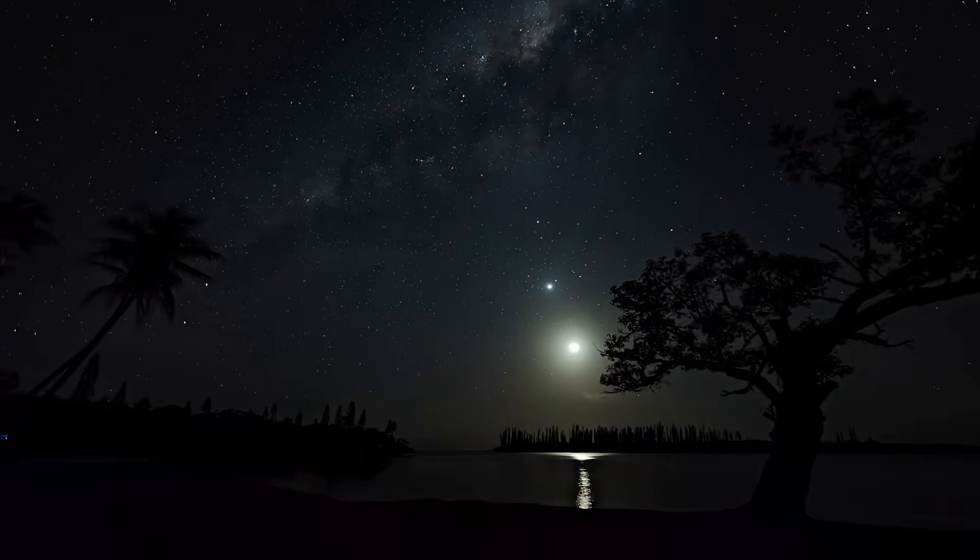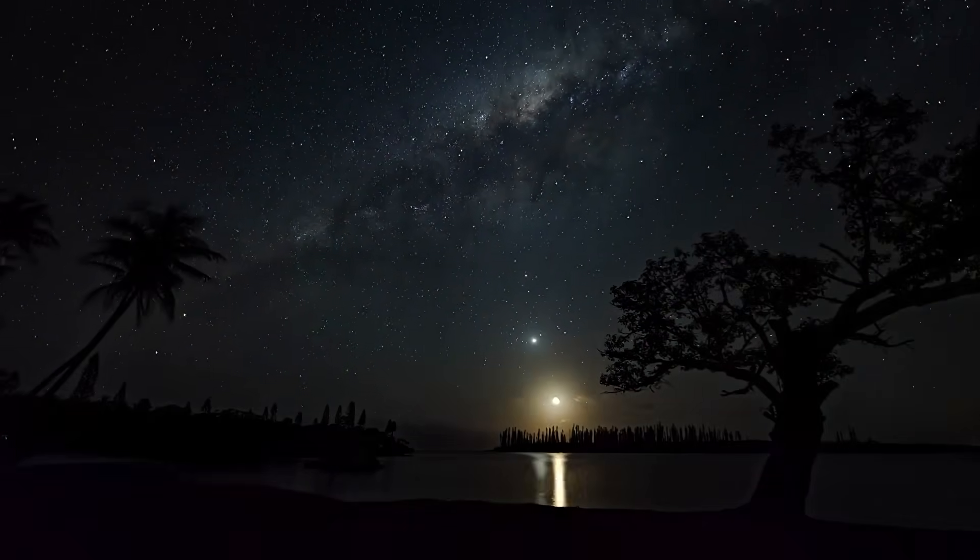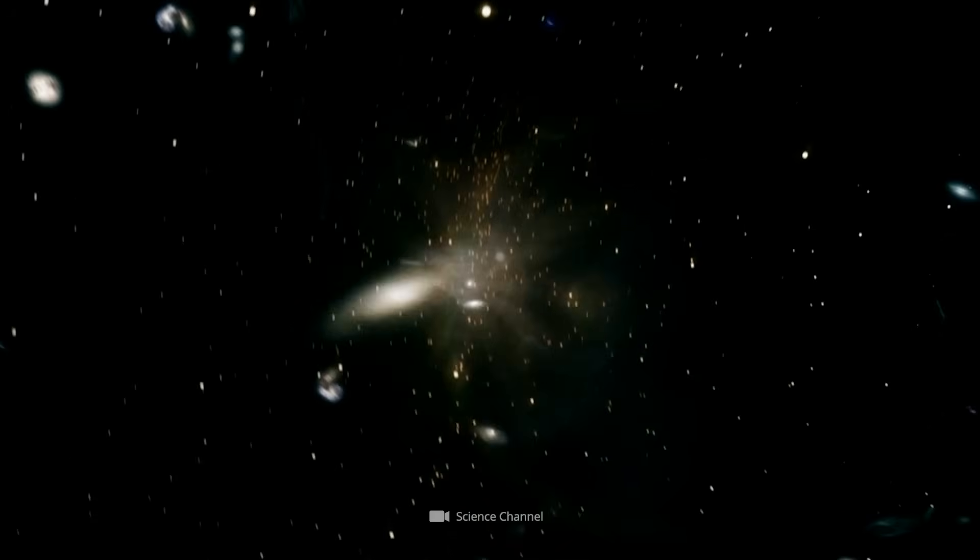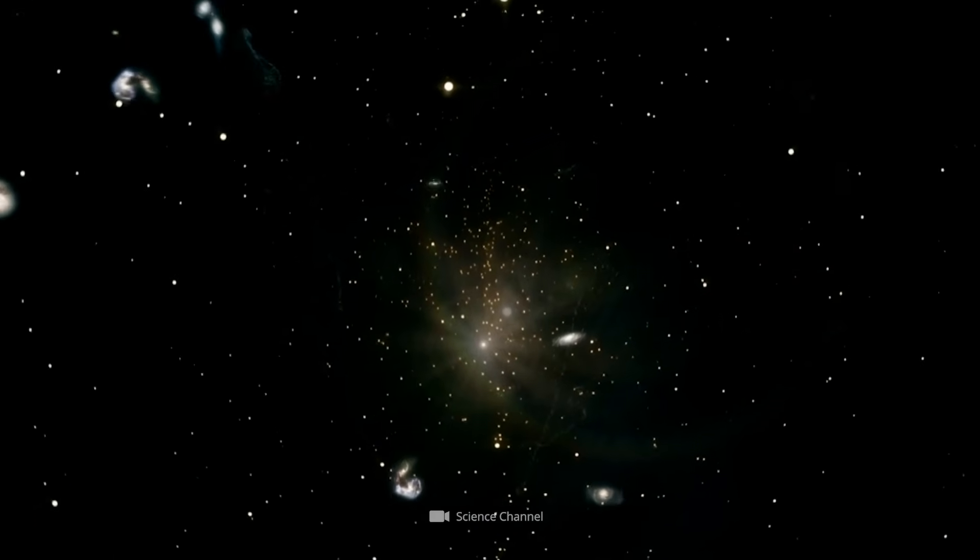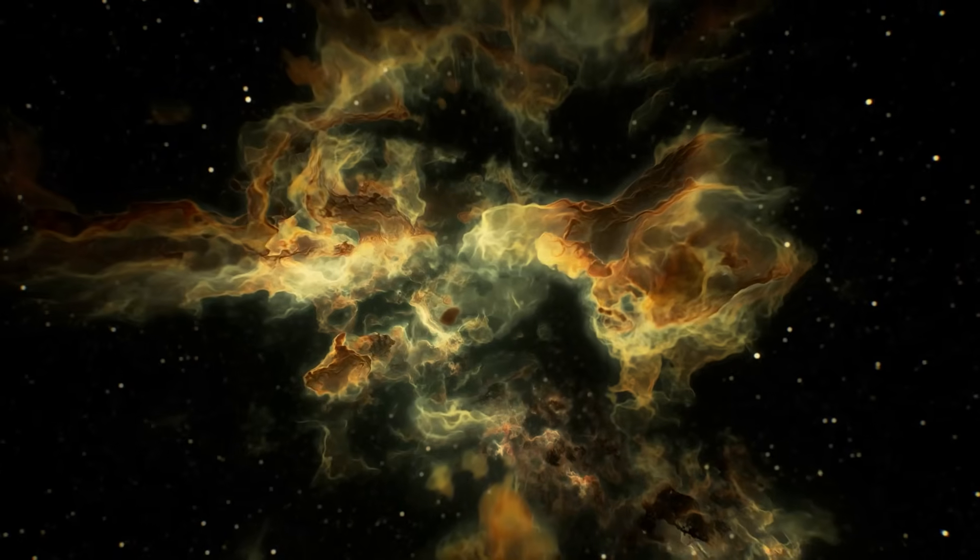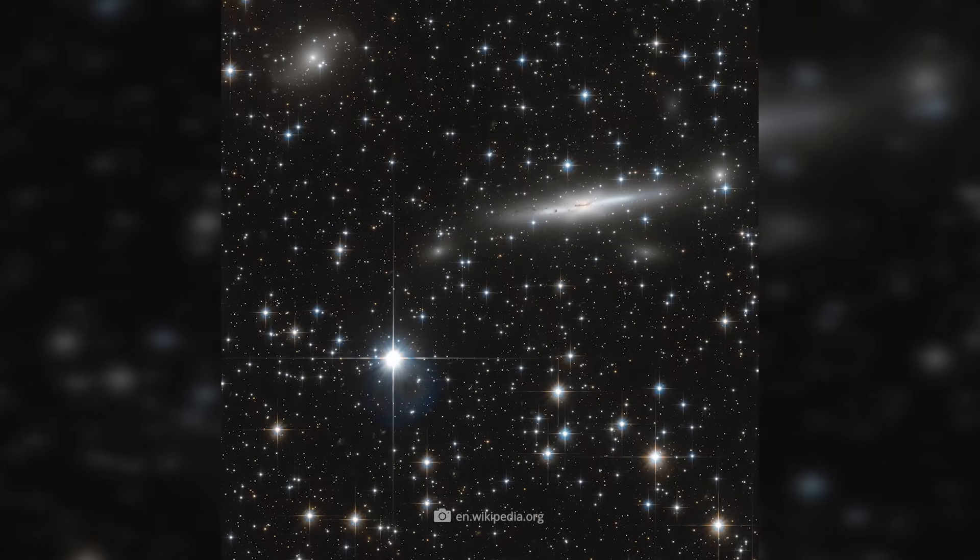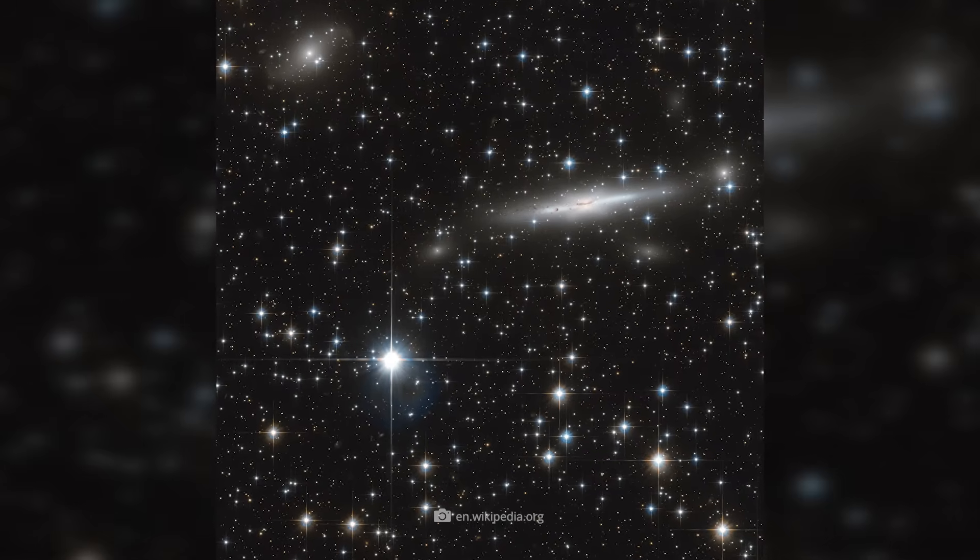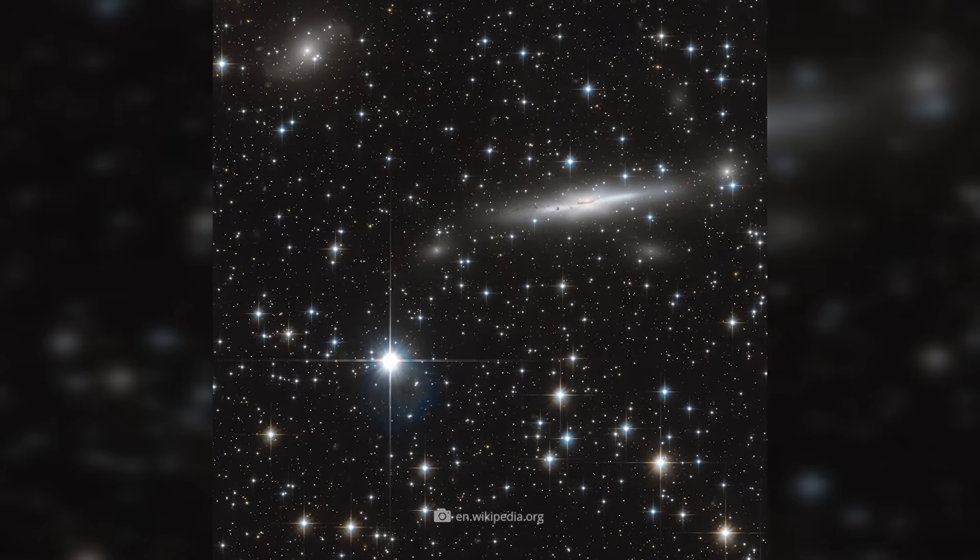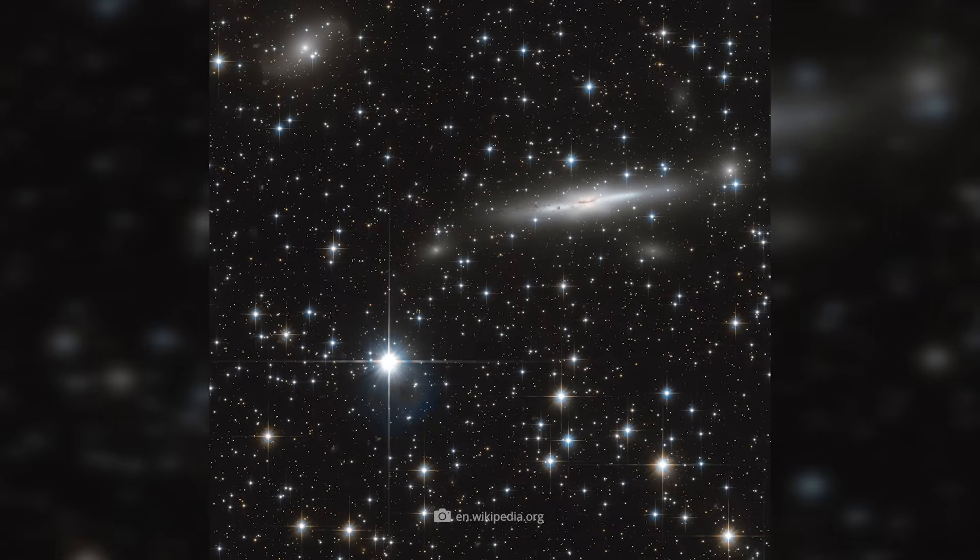Laniakea is Hawaiian and means vast sky or vast paradise. The name was given to the Supercluster to emphasize its immense size and the overwhelming scale of this galactic home territory. The Laniakea Supercluster contains about 100,000 galaxies and extends over 520 million light-years.